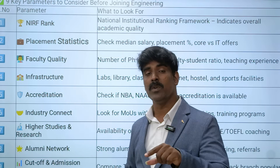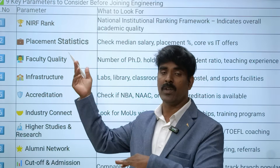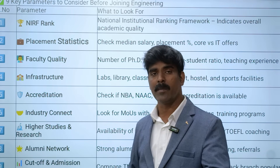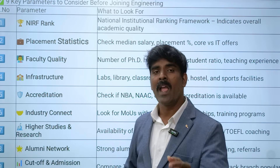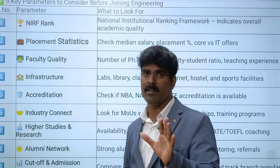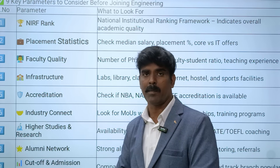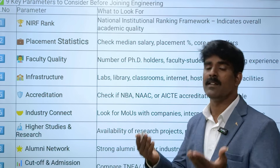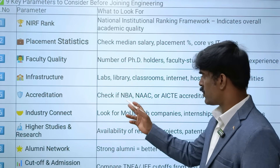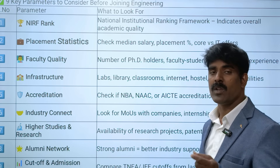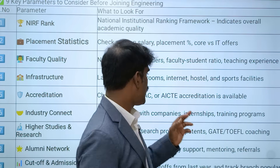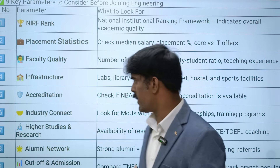Next is accreditation. We are talking about NIRF. If you are joining an ECE department in a college, check the National Board of Accreditation for department-level accreditation. Also check NBA and NAAC - which is the National Assessment and Accreditation Council. AICTE approval is also a level of accreditation.